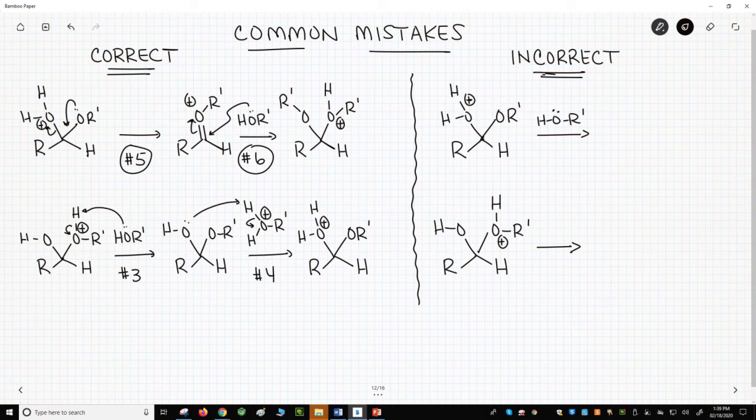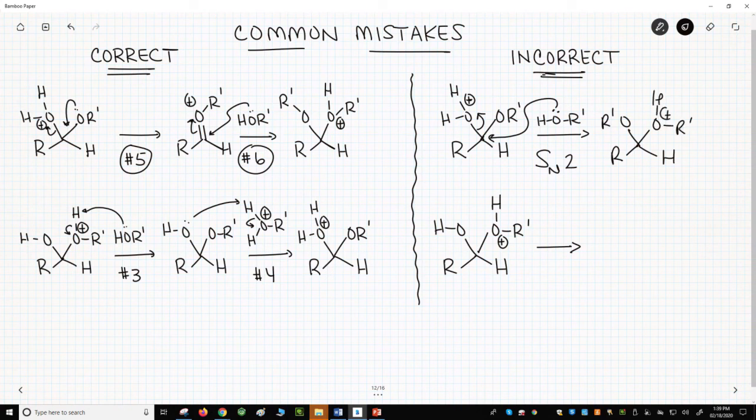So looking to the right, you could think, I want to do a substitution. Let's just do an SN2 to directly access the desired product. What's the problem? SN2 reactions in this pathway are impossible because the reaction does not have any strong nucleophiles. This substitution occurs through first loss of water, step five, and then attack by the weakly nucleophilic alcohol.